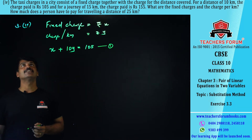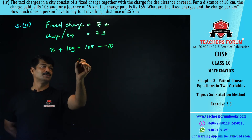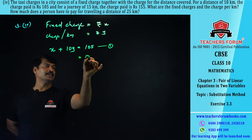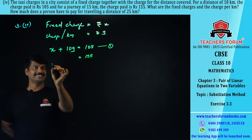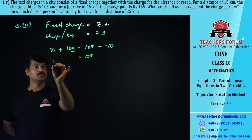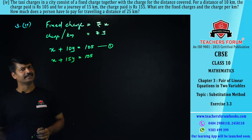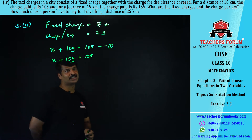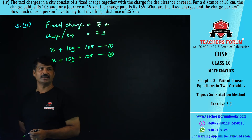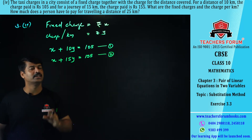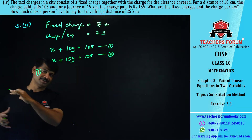The second condition: if you travel 15 kilometers you pay rupees 155. So 155 includes the fixed charge plus 15y. That gives: x + 15y = 155. This is equation number two. We now need to find x and y.